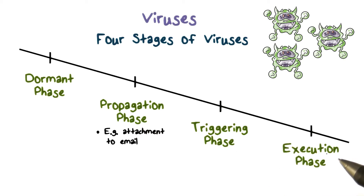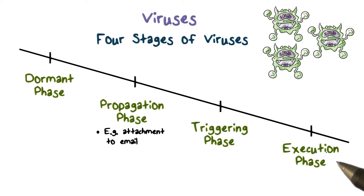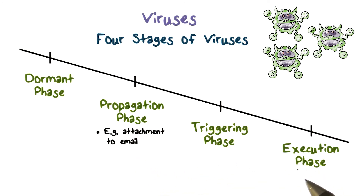The fourth stage is the execution phase. This is when the virus code runs, performs some malicious activities, and most importantly, it looks for targets to infect so that it can spread. For example, in the case of an email attachment, when the virus runs, it can search for users in the address book and then send email attachments with the virus to those users.